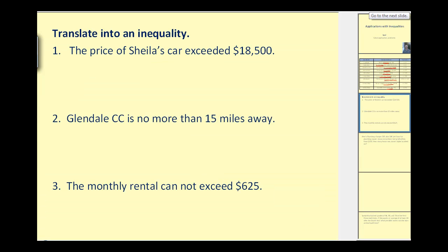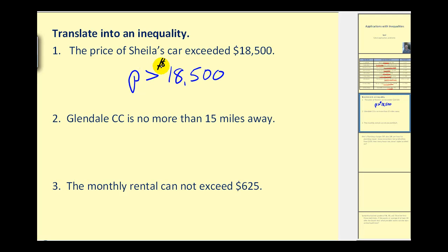Let's start by translating a sentence into an inequality. The price of Sheila's car exceeded $18,500. If we let P equal the price, we know it could be more than 18,500. But the real question is: can it also equal 18,500? It states the price exceeded 18,500, so that means it could not equal that — it had to be more than that.